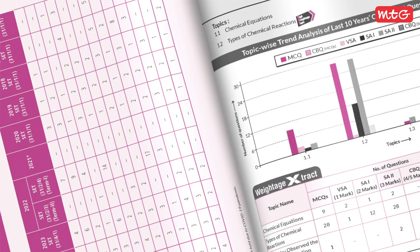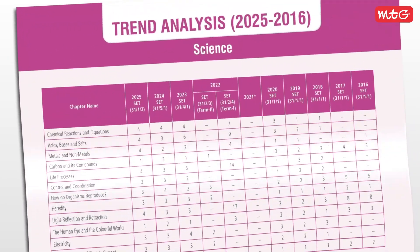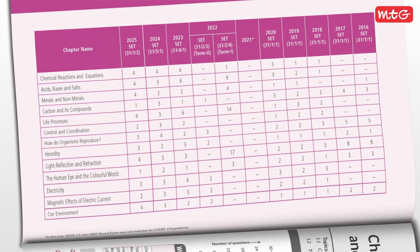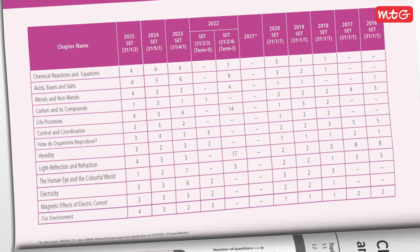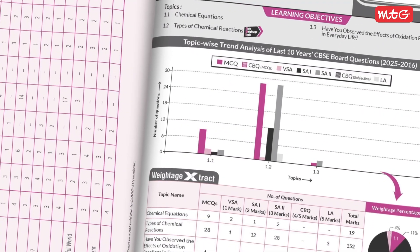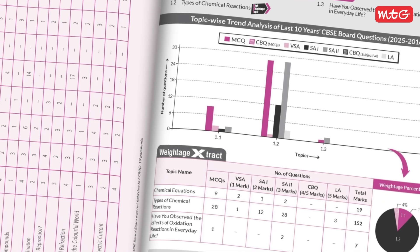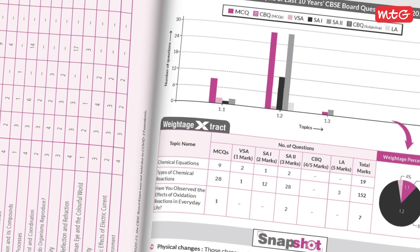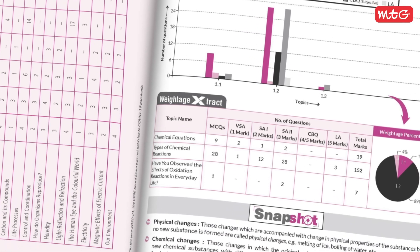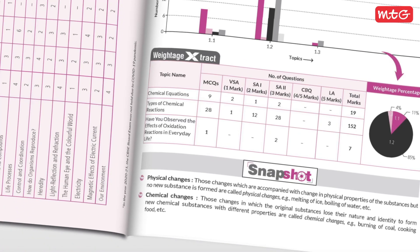Know what to expect in the exam with Trend Analysis and Graphical Analysis of High-scoring Topics from 10 CBSE Previous Year Papers. 10 Years Weightage Extract shows which topics generate which question typologies. Every question has been marked with its weightage and importance based on 10 previous year papers.